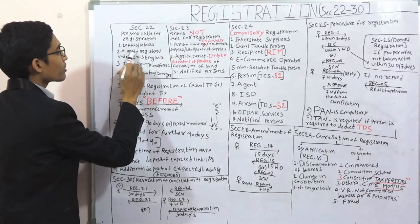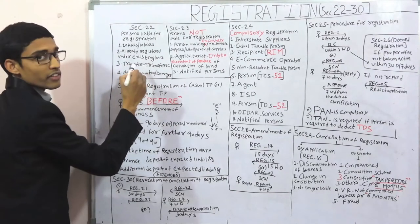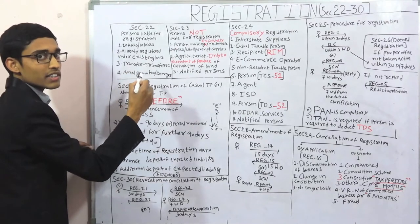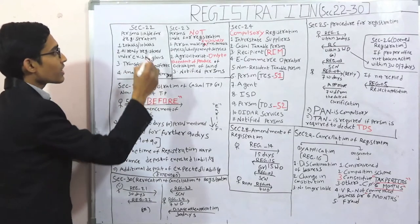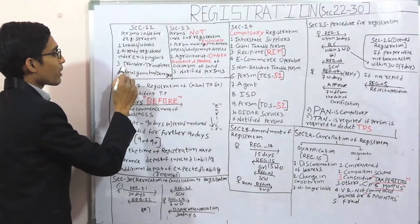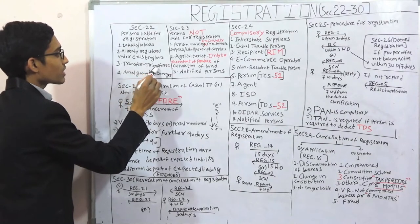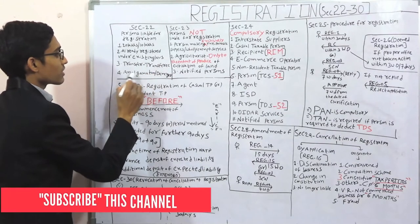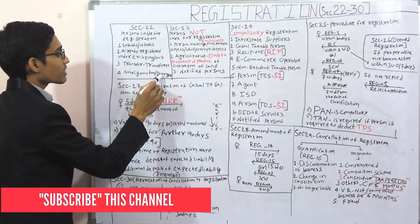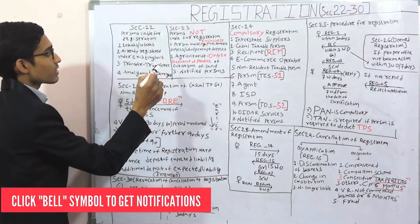Point number 2: already registered under the existing laws. If a person is already registered under existing laws like VAT, service tax, or central excise, then he has to register under GST. Point number 3: transfer. In case of transfer, or amalgamation or re-merger, he has to obtain registration.